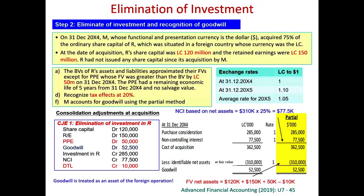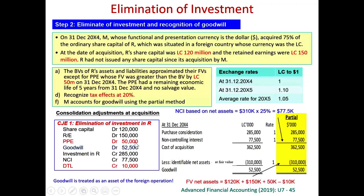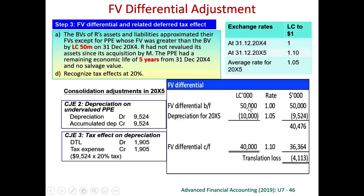Since we are asked to prepare statements one year after acquisition, not just at the acquisition date, we need additional entries. For the fair value increment on PPE, which is a depreciable asset over five years, $50,000 divided by 5 equals $10,000 depreciation per year. The $50,000 was originally translated at the rate of 1 to 1. Under the closing rate method, this depreciation should be translated using the average rate of 1.05, so $10,000 divided by 1.05 equals $9,524.